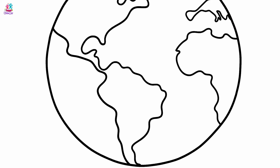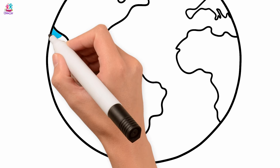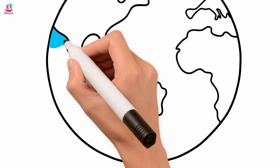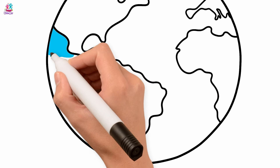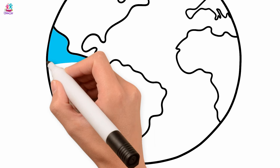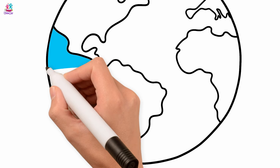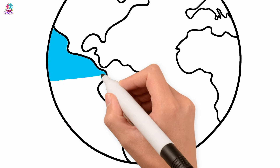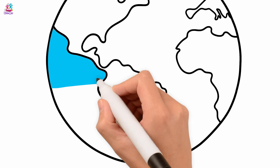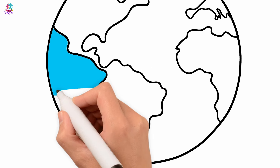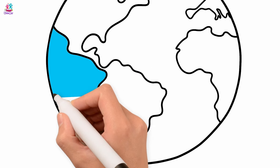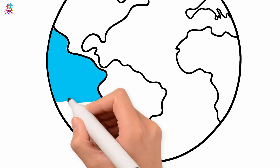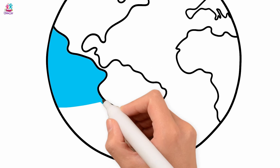Now we can colour in. We're going to colour around our land with blue, of course — it's the ocean and the seas. Careful to stay in between your black lines, not going over any borders.